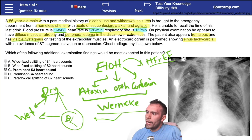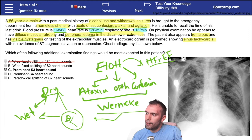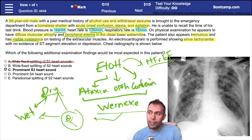Wide fixed splitting of the S1 heart sound can be ruled out pretty quickly — there's really no classic pathology associated with splitting of S1. Wide fixed splitting of the S2 heart sound is classically associated with atrial septal defects. There's no mention of ASD history here, and it would be unusual for a 56-year-old in this clinical setting. You could get fluid overloaded with ASD, but in this context it's not the best answer.